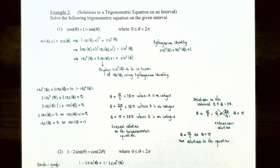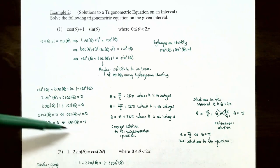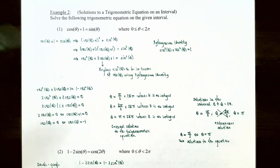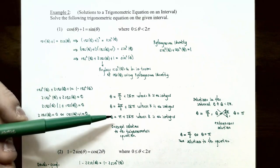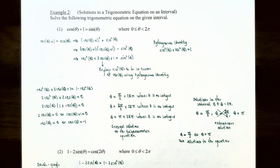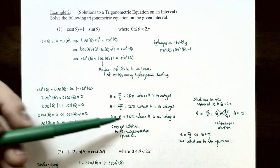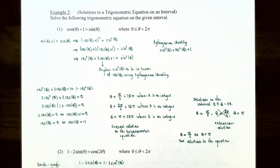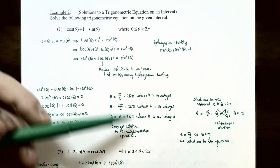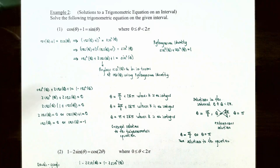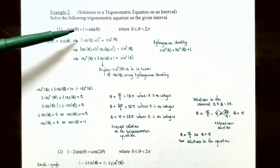For cosine theta equals negative one, the angle is pi. So theta equals pi plus two pi k, where k is an integer, since the period of cosine is two pi radians. This is the general solution to the trigonometric equation cosine of theta plus one equals sine of theta.